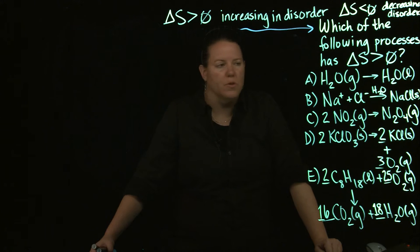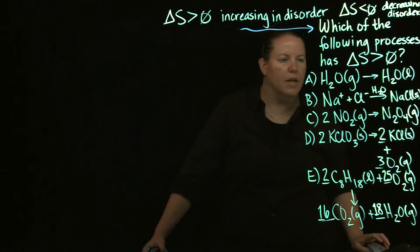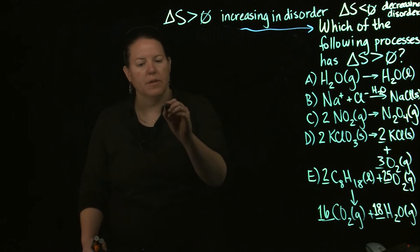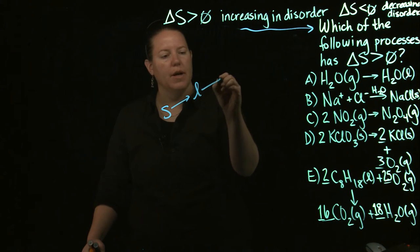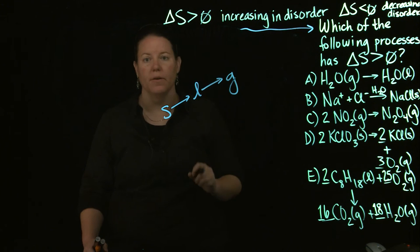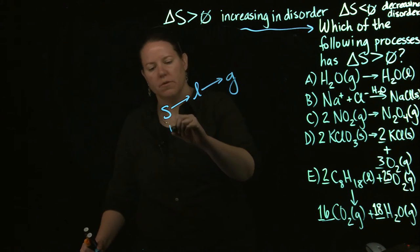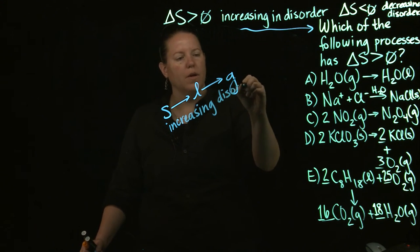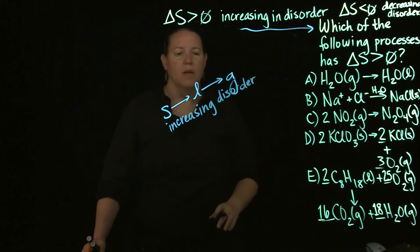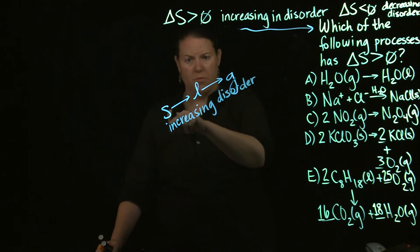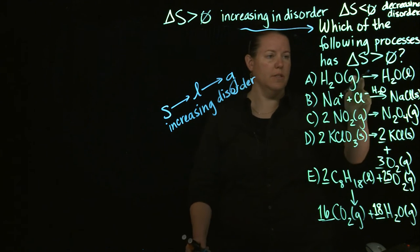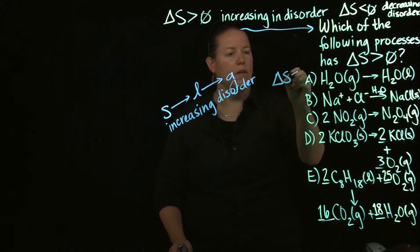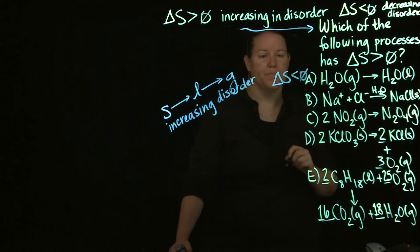So A, we're looking at water as a gas to water as a liquid. Now, as you know, water as a gas to water as a liquid is exactly the way that you would want things to happen if you were talking about increasing in disorder. In terms of this, a solid is much more ordered than a liquid, which is much more ordered than a gas. So this does not have an increase in disorder. This has a decrease in disorder, which means that delta S is less than zero. So that one's out.